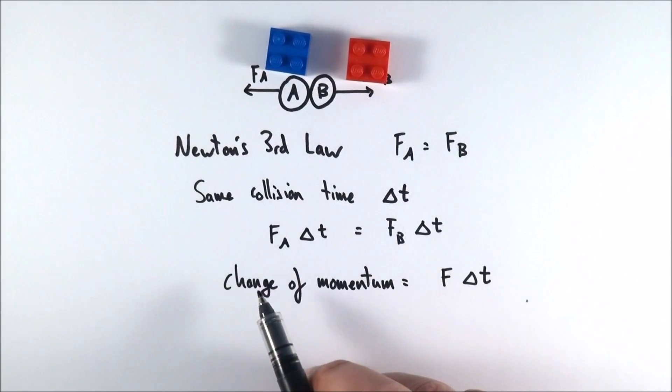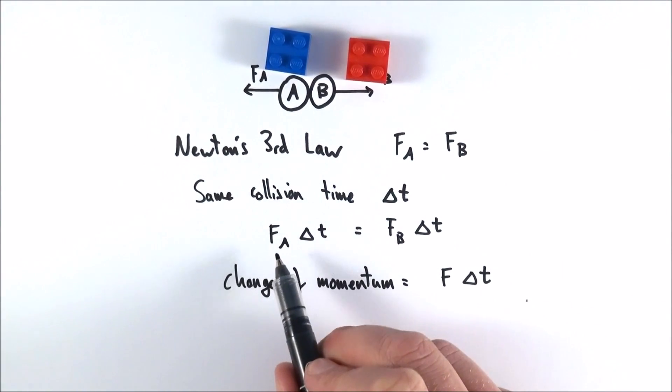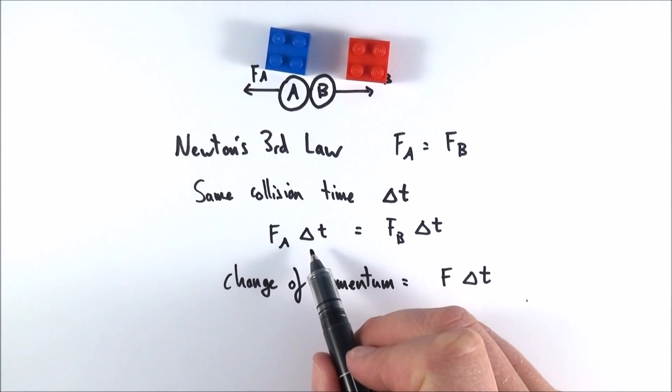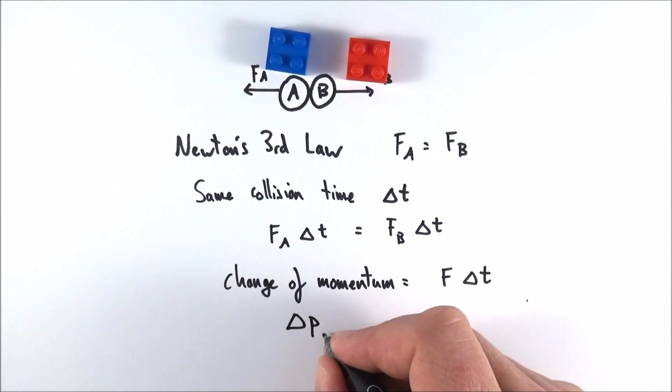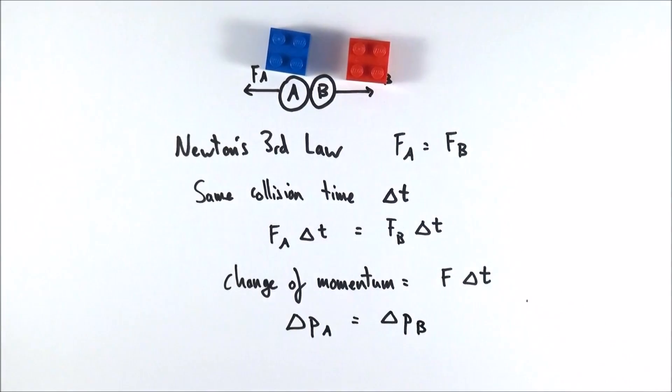So the change in momentum is going to be equal to the force multiplied by the time for which it acts. And because we've got the same size force and the same time for the collision, that means the change in momentum of object A is going to be equal to the change in momentum of object B.